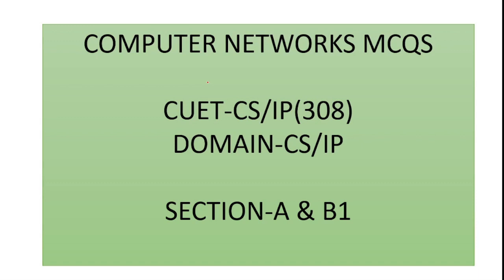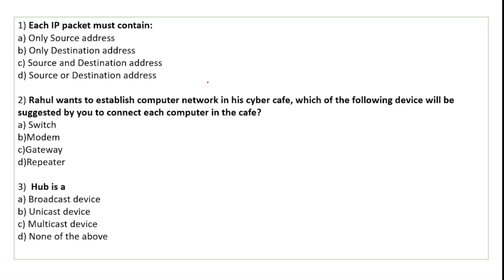Hello everyone, in this video we will do computer networks MCQ. Let us start with the first MCQ: each IP packet must contain what? When data travels in the form of packets from source to destination, the packets contain source and destination address. Source tells where the data came from, and destination address tells where to go.